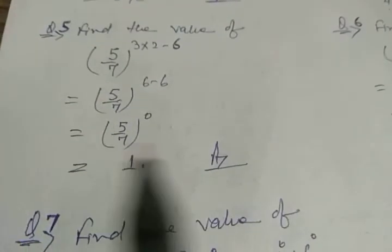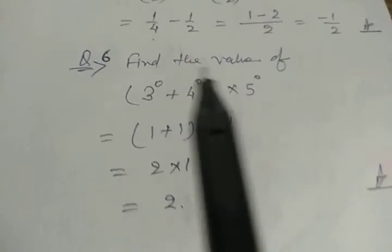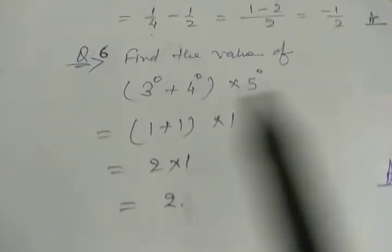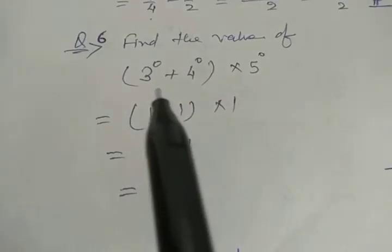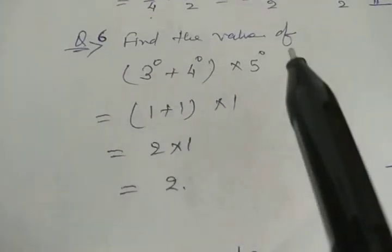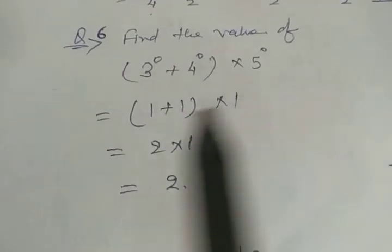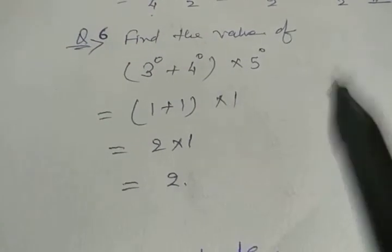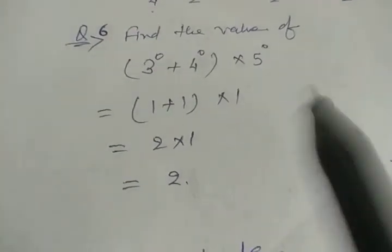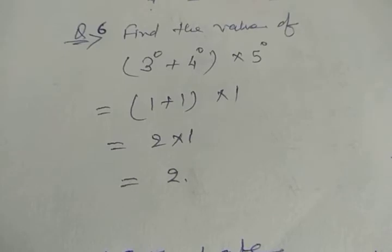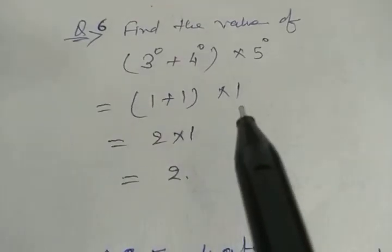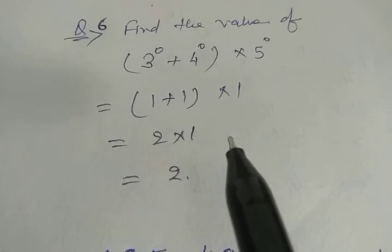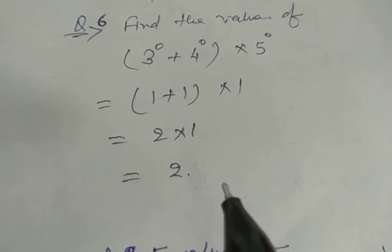Next: find the value of (3⁰ + 4⁰) × 5⁰. Using the formula x to the power 0 equals 1: 3⁰ is 1 and 4⁰ is 1, so inside the bracket it is 1+1 = 2. And 5⁰ is also 1. So 2 × 1 = 2.